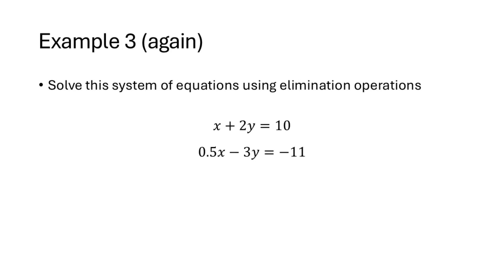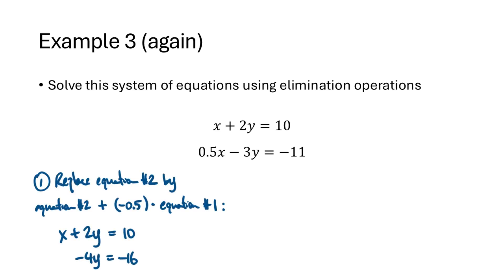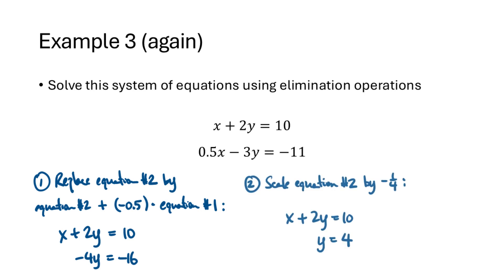Let's look at this system of equations one more time using these formal elimination operations. Our first step is to replace equation 2 by equation 2 plus negative 0.5 times equation 1 — reimagining it as a replacement rather than creating additional equations. We get the system: x plus 2y equals 10 (the original first equation), and the replaced second equation becomes negative 4y equals negative 16. We then scale equation 2 by negative one-fourth to get y equals 4, and go back to find x equals 2.